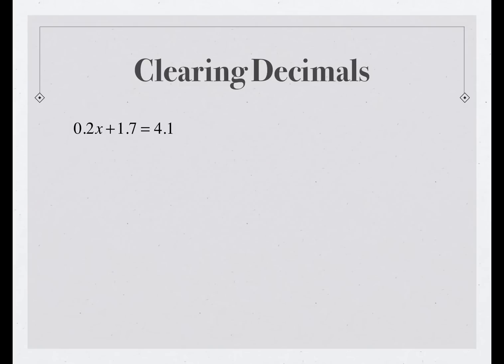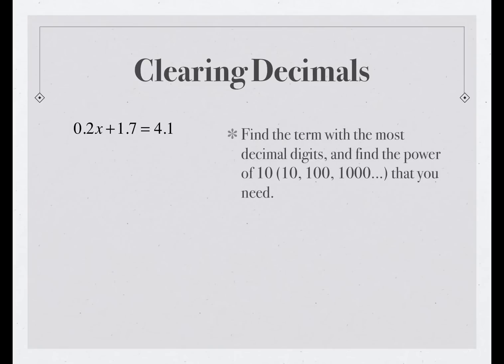We'll take this one first. 0.2x + 1.7 = 4.1. Now, we can look at that, and we can see that each one of those could become an integer if we simply multiplied by 10.